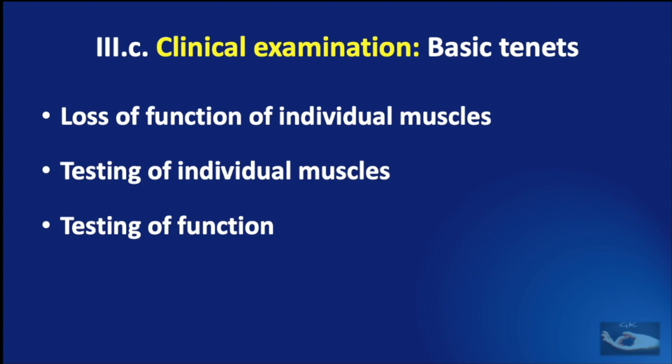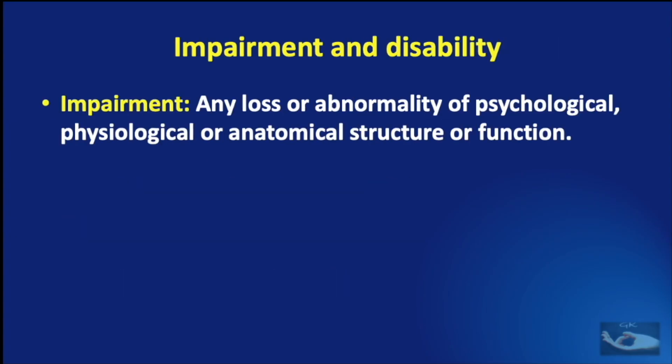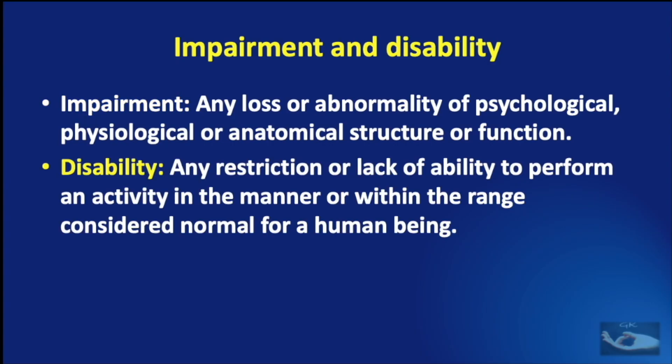This brings us to two important concepts in nerve palsy or injury: impairment and disability. Impairment is any loss or abnormality of psychological, physiological, or anatomical structure or function — for example, a paralyzed muscle constitutes an impairment. Disability, on the other hand, refers to the restriction or lack of ability to perform an activity in the manner considered normal for a human being — so the inability of the hand to perform a function due to muscle paralysis is the disability.